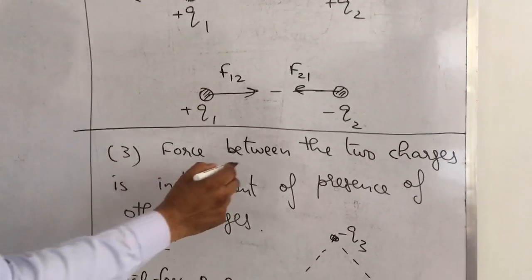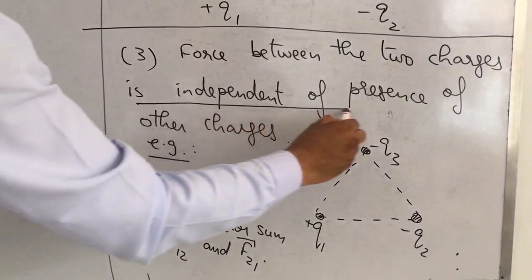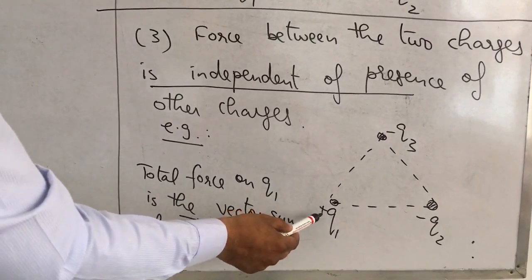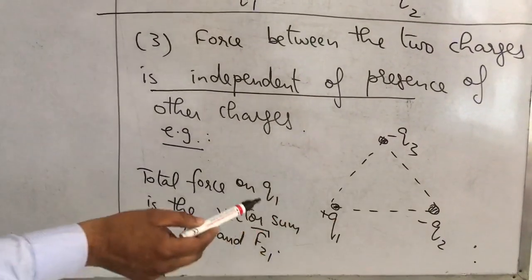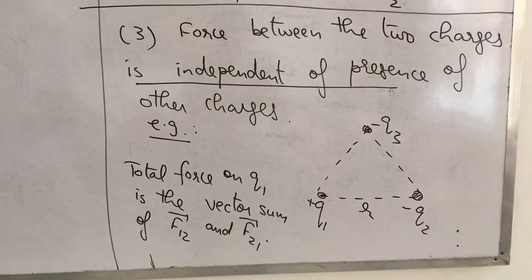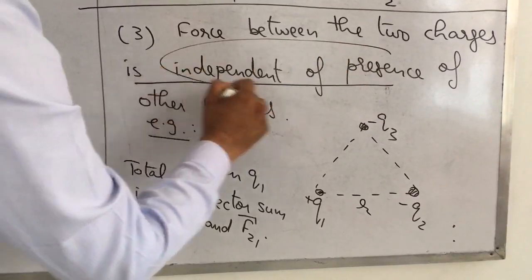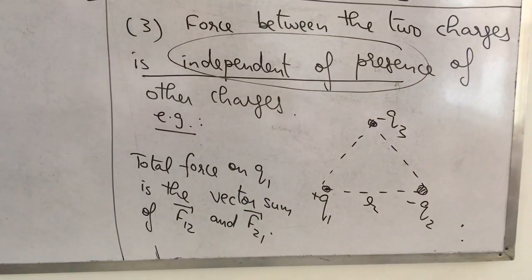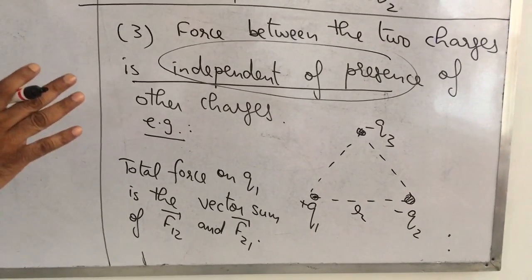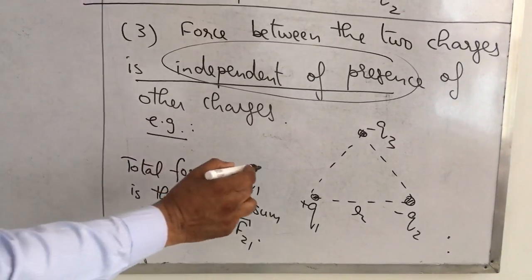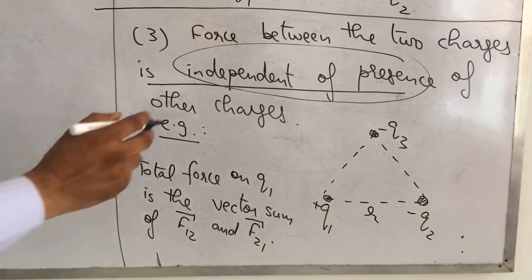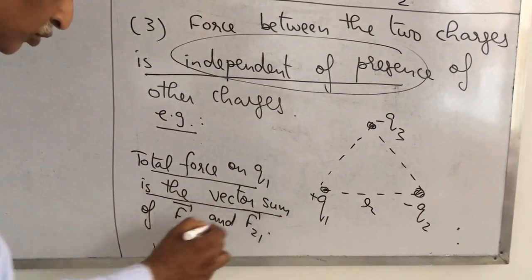Another important point: force between two charges is independent of the presence of other charges. For example, take charges +Q1 and -Q2 separated by distance R. The attractive force between them is KQ1Q2 upon R squared. If we introduce a third charge Q3 (taking -Q3), the force between Q1 and Q2 is unaffected — there is no change. But because of Q3, there is an additional force on Q1 due to Q3.